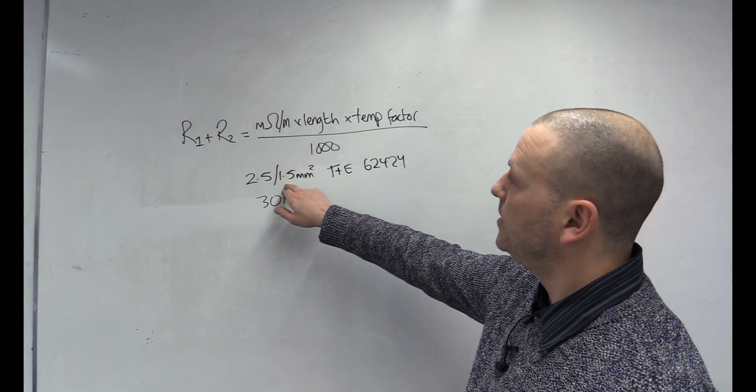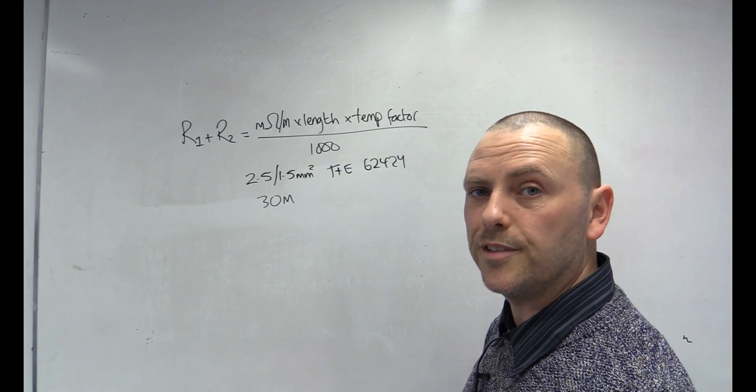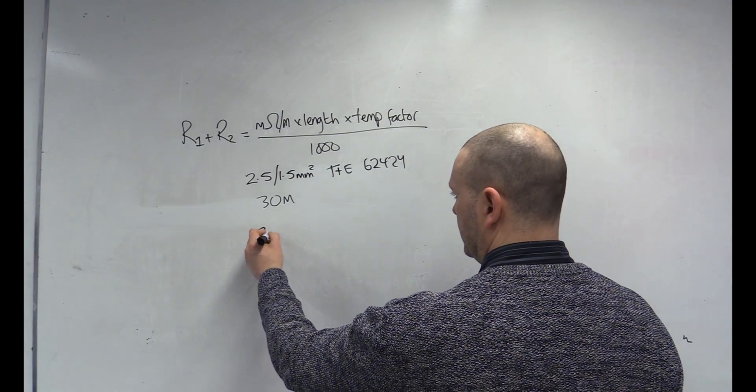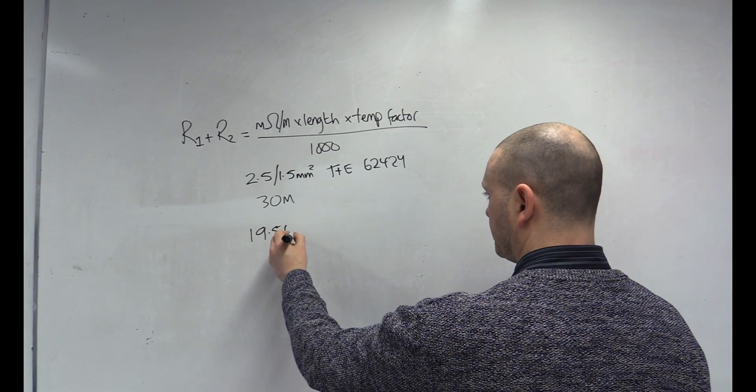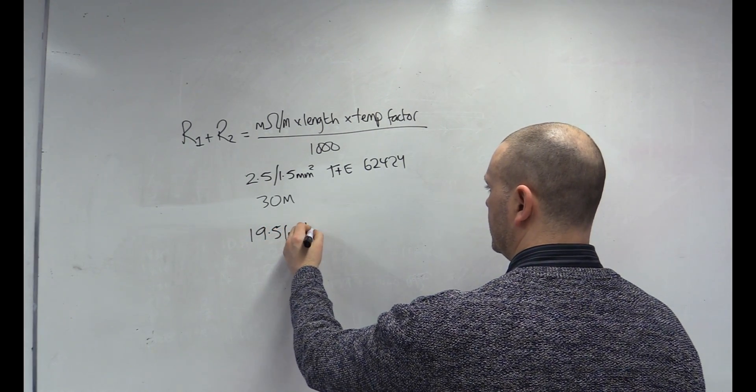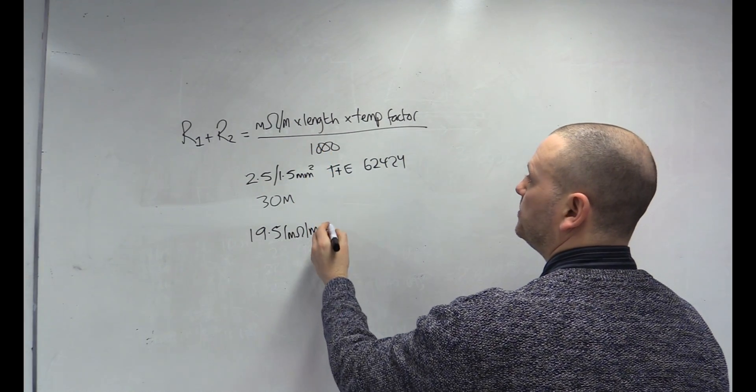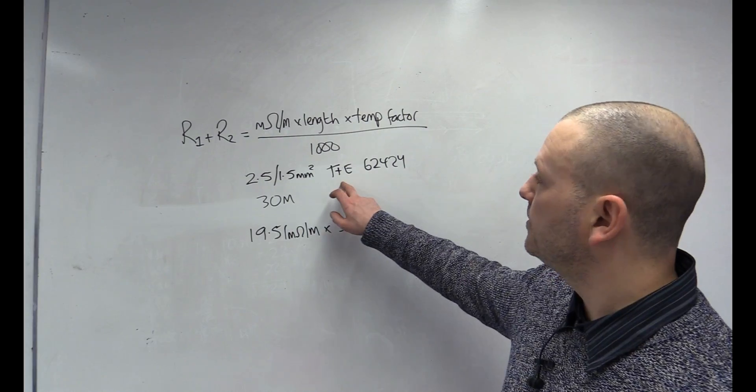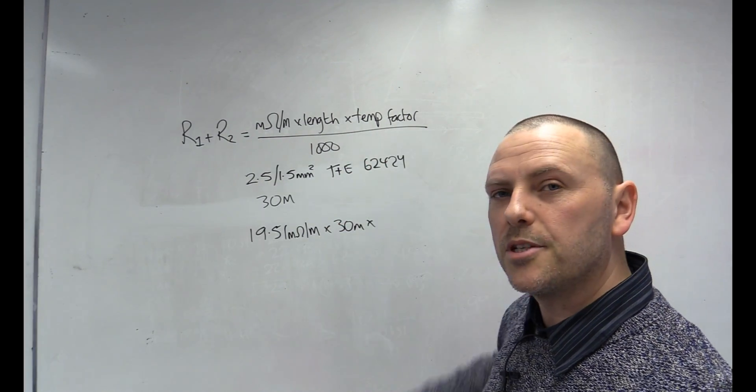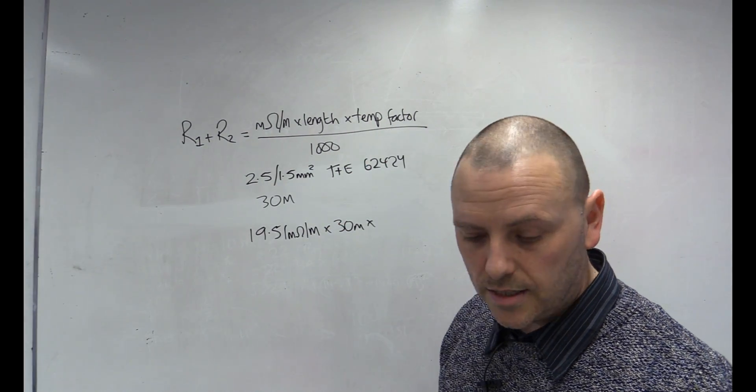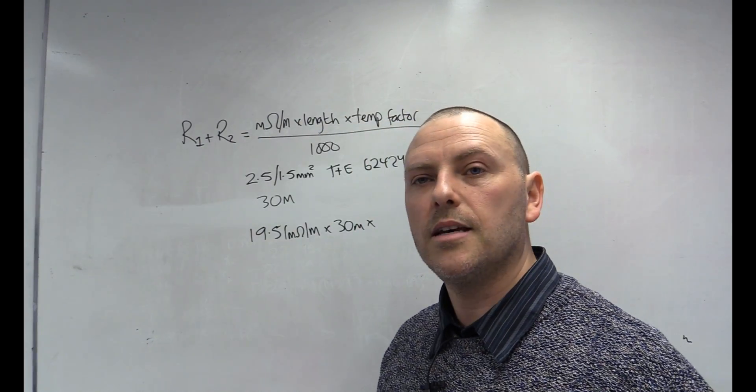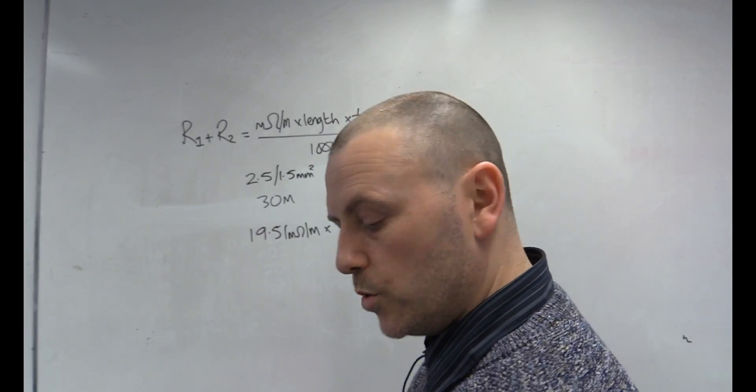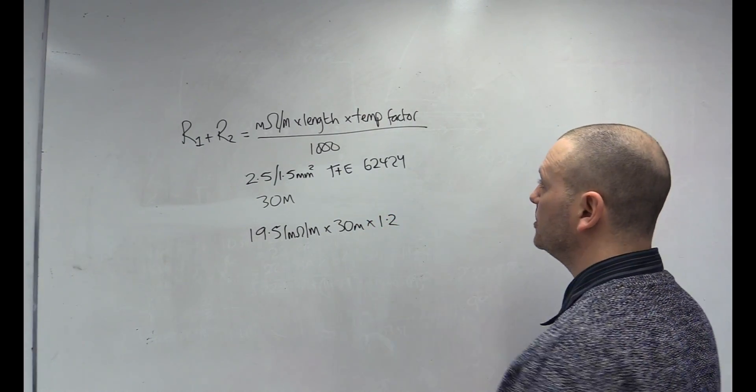First off, we just need to find out what the milliohms per metre value is for a 2.5, 1.5 cable. And when you have a look in that table, you'll see that it's 19.51 milliohms per metre. We times that by the length, 30 metres. Now, a twin and earth is a 70 degree cable. So, we need the temperature factor for a 70 degree cable. And when we have a look at table I3, we will see that it's 1.2.